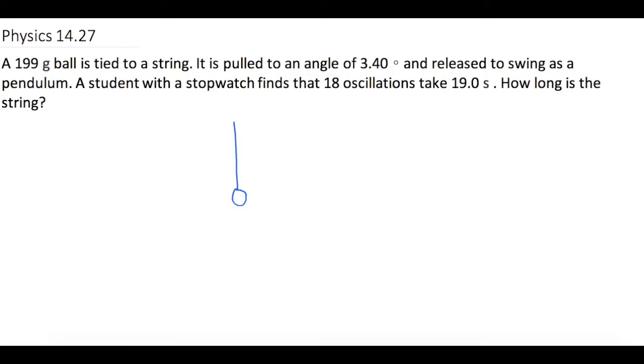We pull that ball up to an angle of 3.4 degrees and release it to swing as a pendulum back and forth. They tell us the mass of the ball is 199 grams, which is 0.199 kilograms, and that we have 18 oscillations in 19 seconds.